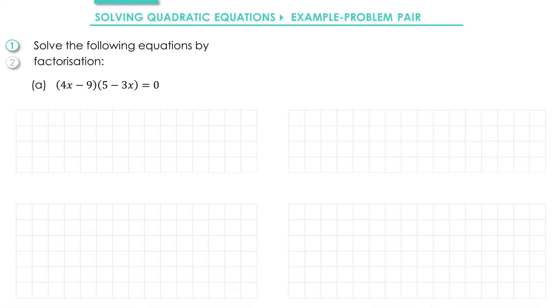In this example we're going to be solving quadratics by factorizing. There's three parts A, B and C. In part A we've got (4x - 9)(5 - 3x) = 0.